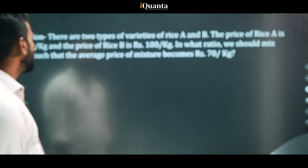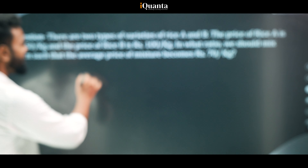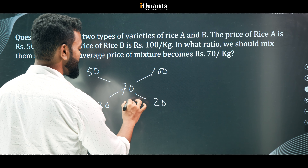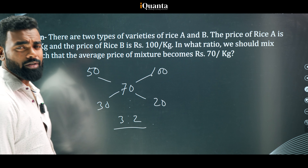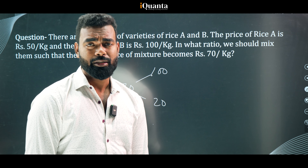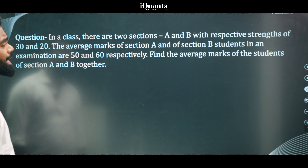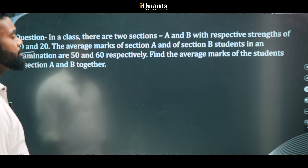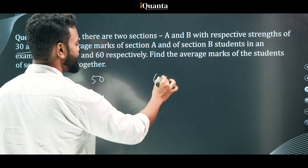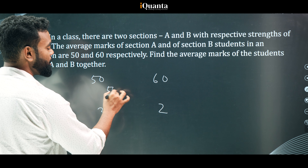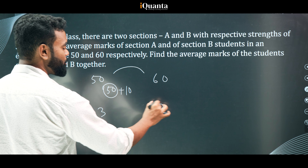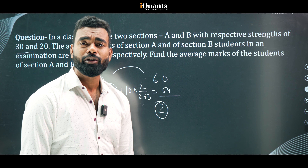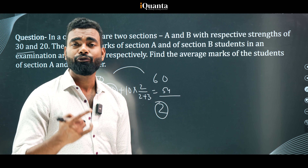Let's try another quick example: rice A at Rs. 50, rice B at Rs. 100, mixed to get average Rs. 70. Using allegation: 100 - 70 = 30, 70 - 50 = 20, ratio = 30:20 = 3:2. Another: sections A and B with strengths 30 and 20, average marks 50 and 60 — using the one-line method: 50 + 10 × (2/(2+3)) = 54. So much faster than the longer calculation from before.